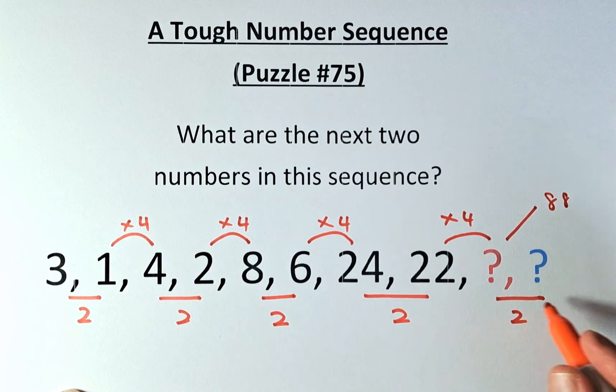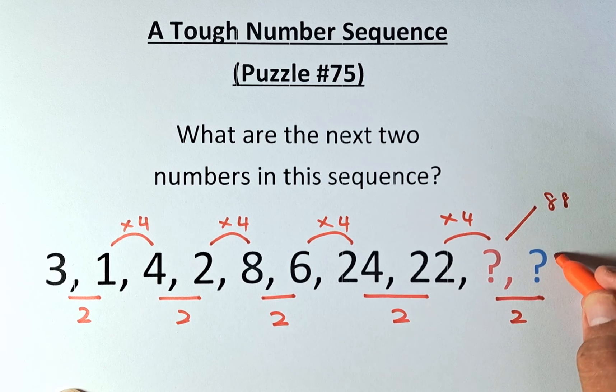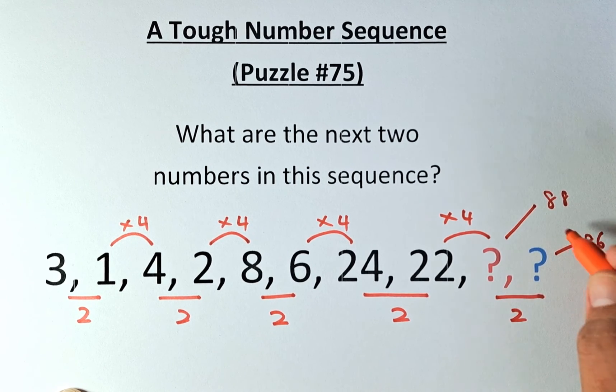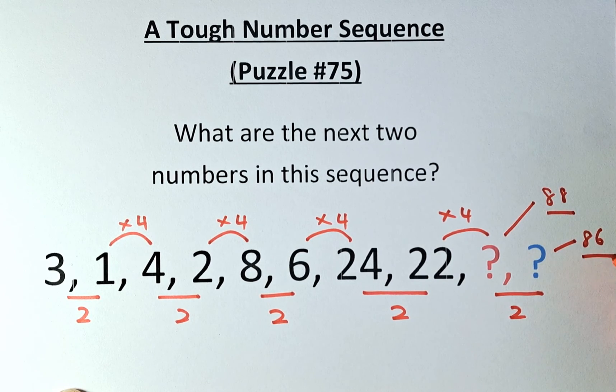And because the difference is 2, the next question mark is going to be 86. So the first question mark is 88, the second question mark is 86. I believe most of you will get it right because you guys are geniuses, and I'll see you in the next one.